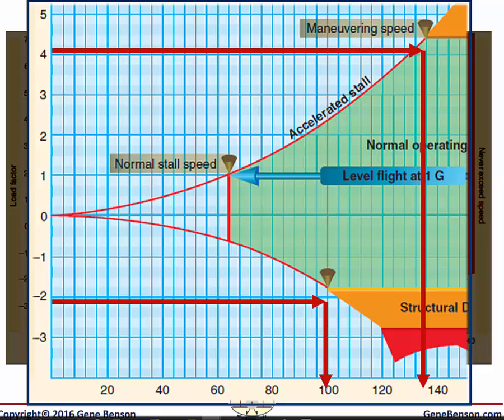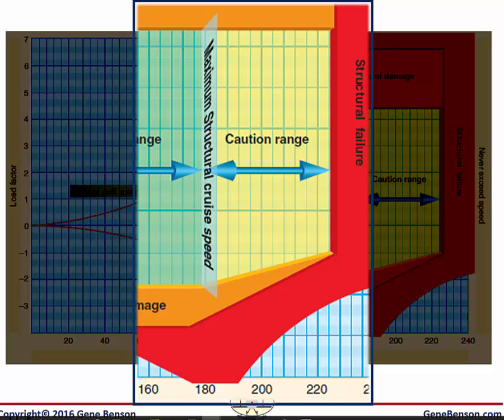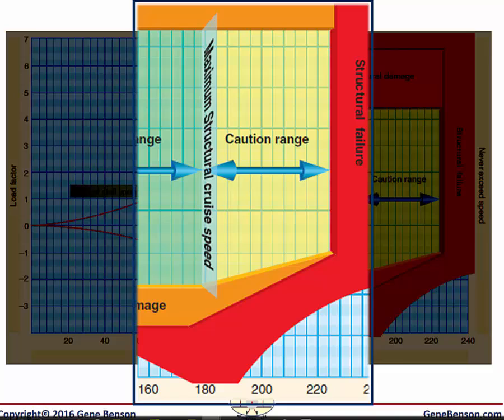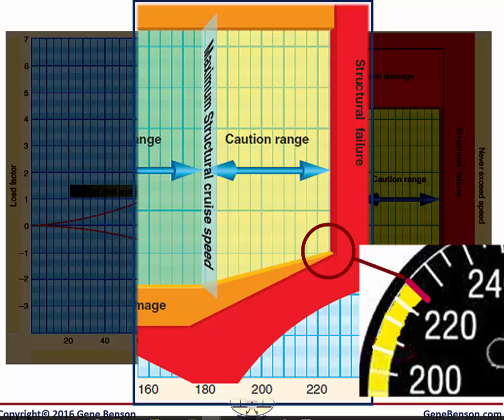Remember that maneuvering speed is not shown on the airspeed indicator. The V-G diagram also shows where the color markings on the airspeed indicator come from. The upper limit of the green arc is maximum structural cruising speed — in this example, it is the airspeed above which a load factor less than negative 1.76 will cause damage. The red radial line, or never exceed speed, is where damage will occur regardless of the load factor.